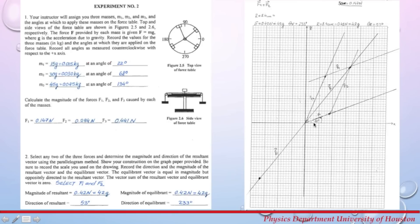Use a protractor to measure the angle the resultant takes with the positive x-axis — that is 53 degrees. The equilibrium vector is simply the resultant extended in the opposite direction: same length, opposite direction. The angle of the equilibrium vector is 53 degrees plus 180 degrees, giving 233 degrees.